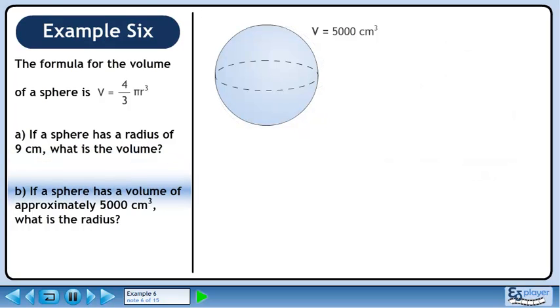Moving on to part b, if a sphere has a volume of approximately 5000 cubic centimeters, what is the radius?